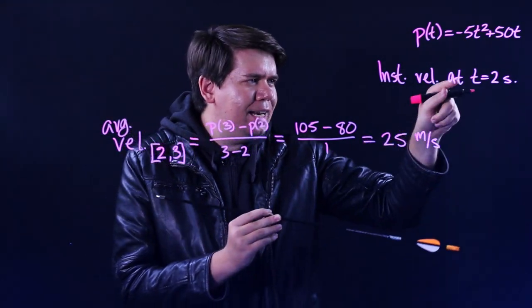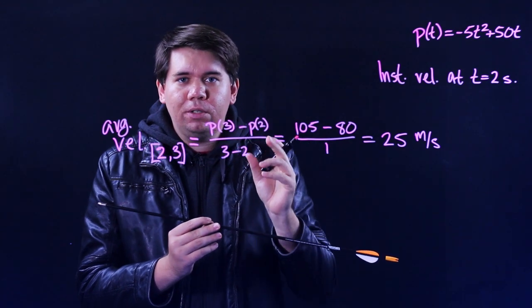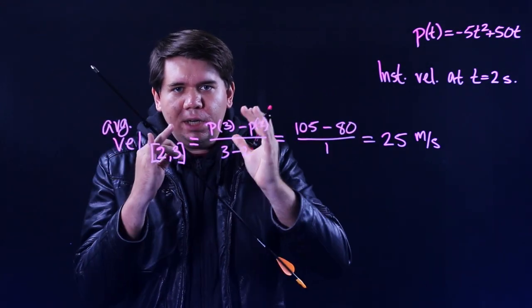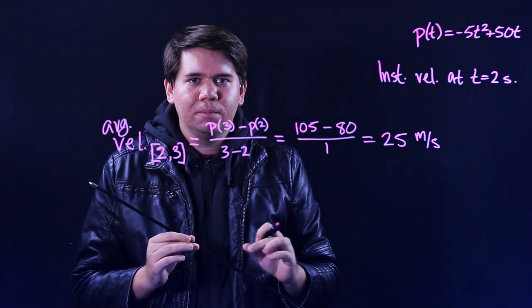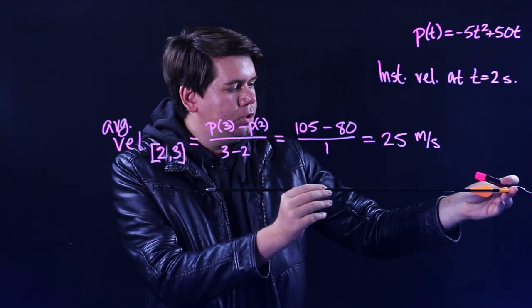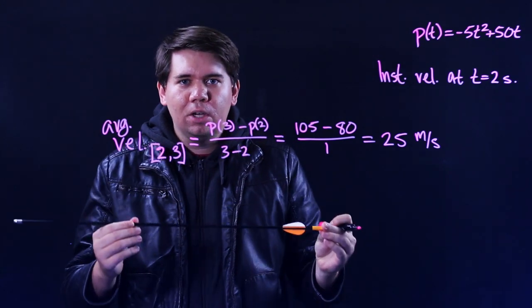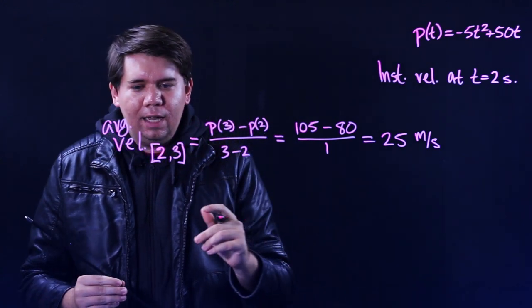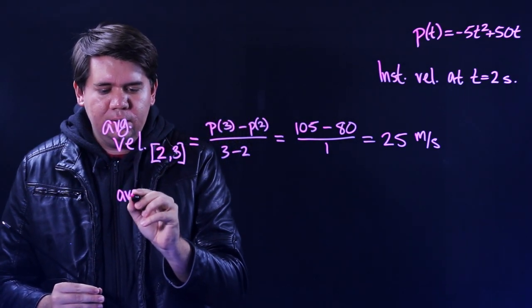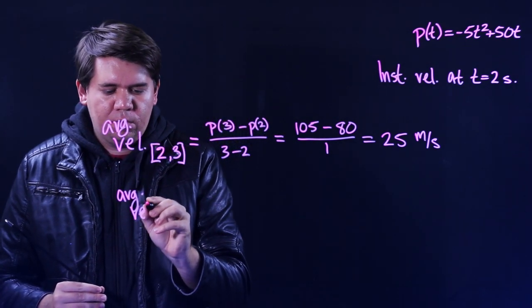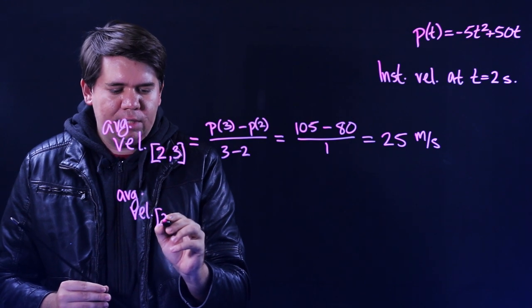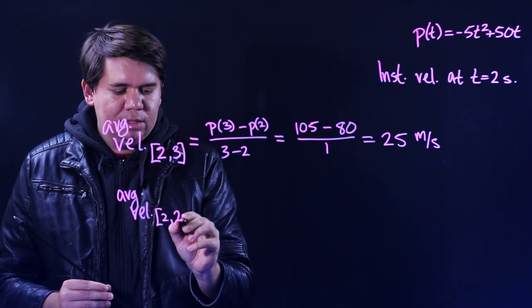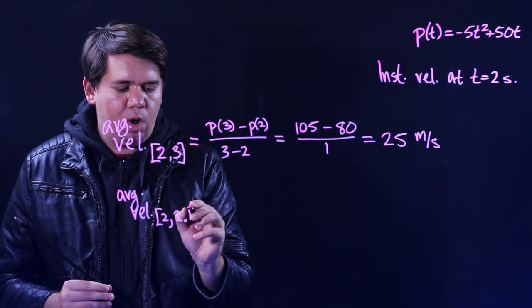Now if you want to say, yeah, but what's happening at exactly 2 seconds, what we're going to do now is we're going to shrink the interval we're looking at. Instead of asking what happens from 2 seconds to 3 seconds, we're going to zoom in and ask, what is the average velocity from 2 seconds to just a little bit more than 2, say 2.1.